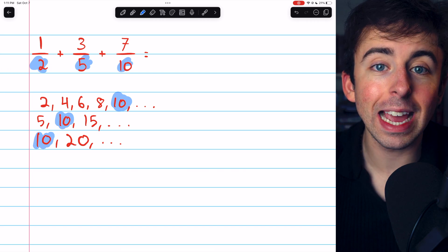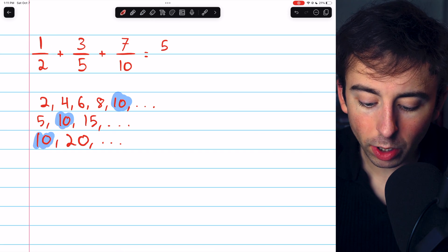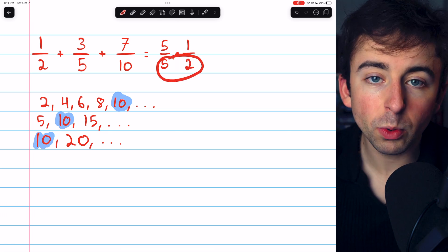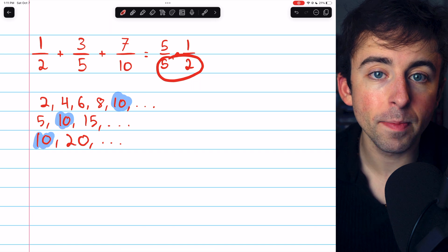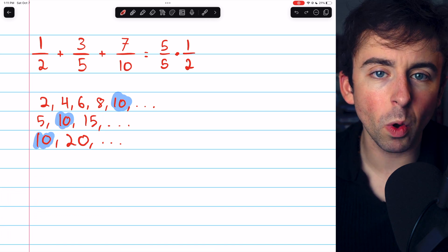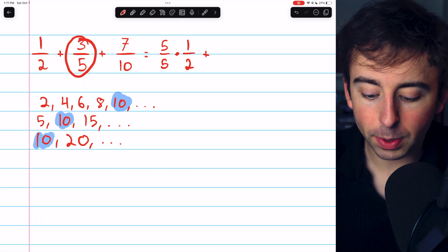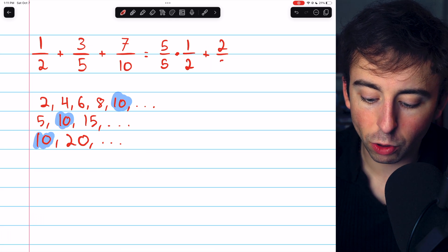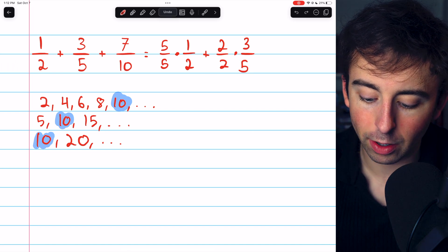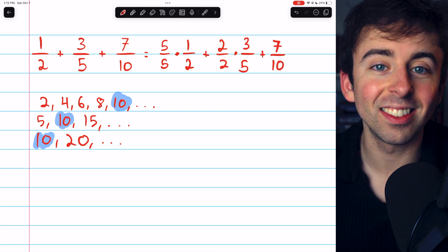So 10 is going to be our new common denominator. To change the denominator of 1 half, we're going to multiply it by 5 over 5, because 5 times 2 will give us that denominator of 10. Of course, we need to multiply by 5 over 5, because that way we're just multiplying by 1 and not actually changing the value of the fraction. We need to multiply 3 fifths by 2 over 2. That way, the 2 times 5 will give us the denominator of 10. And 7 tenths, we don't have to change at all, because it already has a denominator of 10.